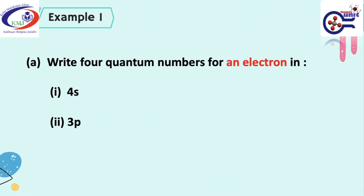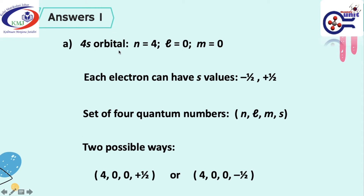Example 1: Write four quantum numbers for an electron in 4s and 3p. For the 4s orbital, n is equal to 4, l is equal to 0 because it is an s orbital, and when l is equal to 0, m is equal to 0. Each electron can have s values of negative half and positive half. The set of quantum numbers must be written as (n, l, m, s). So two possible ways are (4, 0, 0, +½) or (4, 0, 0, −½). You cannot write both because the question asks you to write for one electron only.